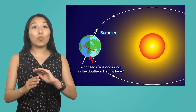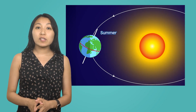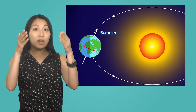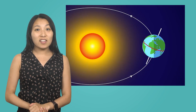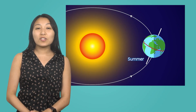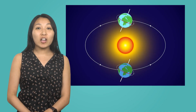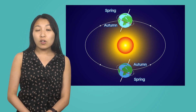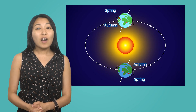The hemisphere tilted away receives less direct sunlight, making it colder with fewer hours of sunlight. That means when it's summer in one hemisphere, it's winter in the opposite. Six months later, the southern hemisphere is tilted toward the sun and has summer, and the northern hemisphere is tilted away and has winter. Spring and autumn occur when both hemispheres are tilted toward the sun more evenly, so they both have mild weather and days and nights of a similar length.